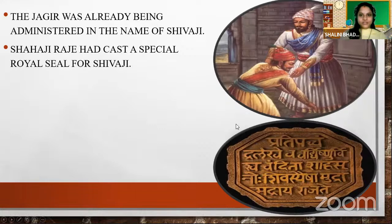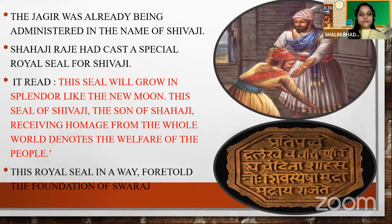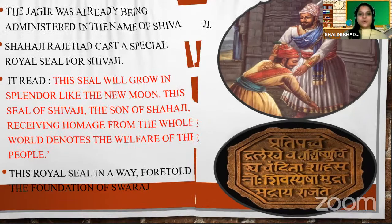It is Sanskrit language. And as we all know, Shahaji was a great scholar of Sanskrit. So he cast a royal seal for Shivaji Maharaj in Sanskrit language. The seal reads: 'This seal will grow in splendour like the new moon. The seal of Shivaji, the son of Shahaji, receiving homage from the whole world, denotes the welfare of the people.' So we can see that the royal seal foretold the foundation of Swaraj — it was just the beginning that Shivaji was going to establish a wonderful Swaraj in the guidance of Shahaji Maharaj.